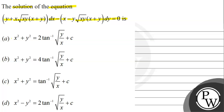First option: x² + y² = 2tan⁻¹(√(y/x)) + c. Second option: x² + y² = 4tan⁻¹(√(y/x)) + c. Third option: x² + y² = tan⁻¹(√(y/x)) + c. Fourth option: x² − y² = 2tan⁻¹(√(y/x)) + c.